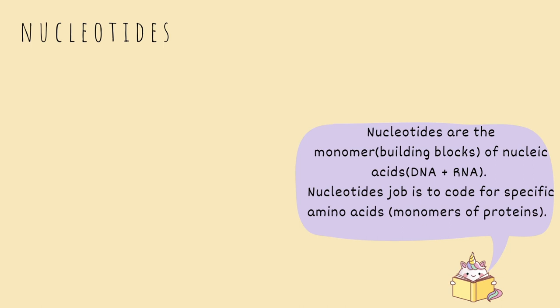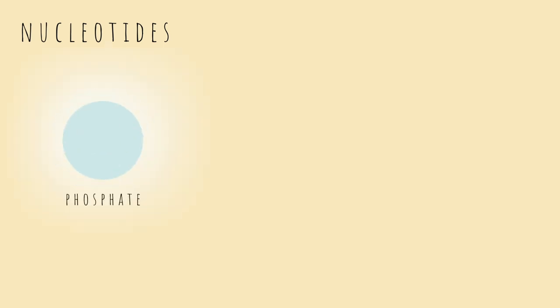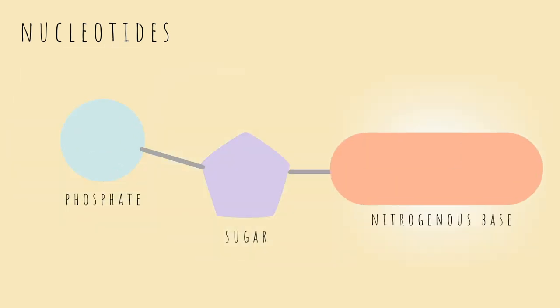In other words, amino acids are what proteins are made of. You can think of it like this: nucleotides make the amino acids, and amino acids make the proteins. Nucleotides are made of a phosphate, a sugar, and a nitrogenous base.